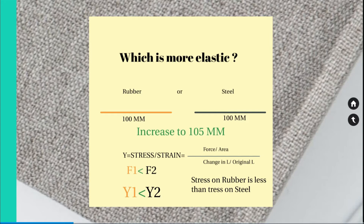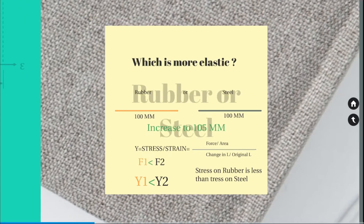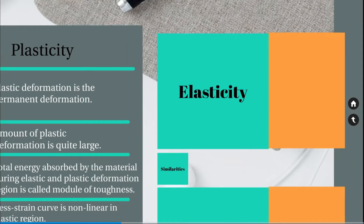Stress equals force divided by area, and strain is the change in length divided by original length. The force required to stretch the steel wire would be much higher than the force required for rubber. Therefore, F2 is greater than F1, where F2 is the force required to pull the steel wire from 100 mm to 105 mm, and F1 is the force required to pull the rubber wire from 100 mm to 105 mm. Therefore, the Young's modulus of steel is always greater than rubber, and we can conclude that the elasticity of steel is higher than the elasticity of rubber.